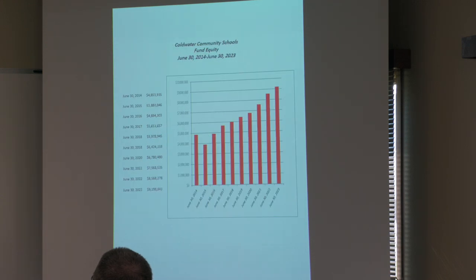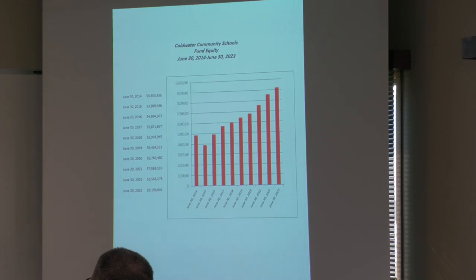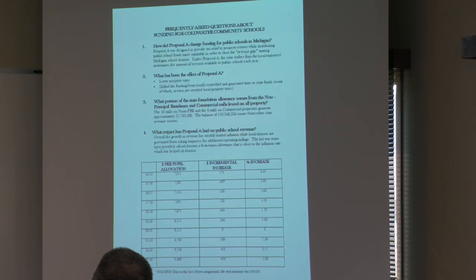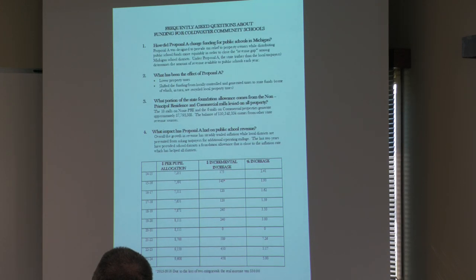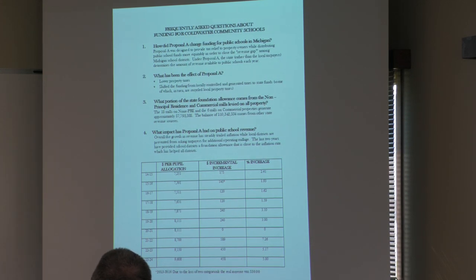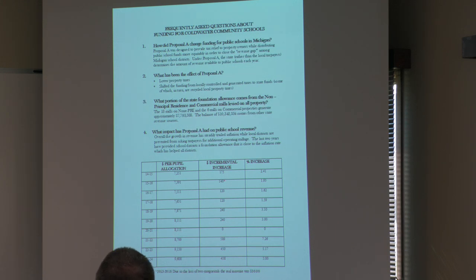This chart shows what the fund equity has done since 2014 — we've been steadily going up with a little dip, and have steadily been increasing. Some of that is likely due to COVID money, since we've been able to use those funds in place of general funds for normal expenses. The next slide explains how Proposal A changed funding for Michigan schools, and shows a chart of the per-pupil allocation since 2014-15, which has steadily increased.